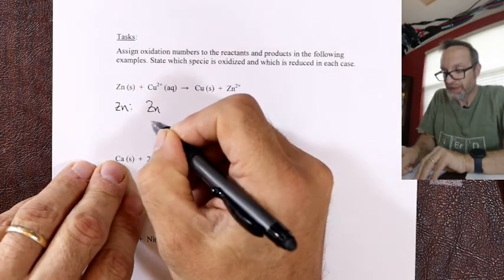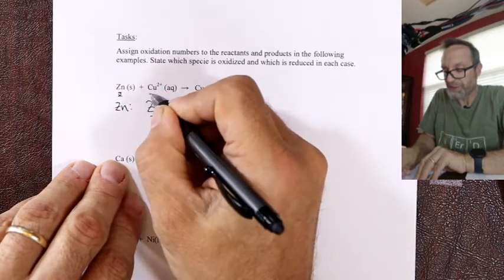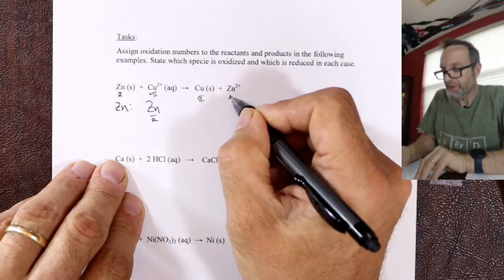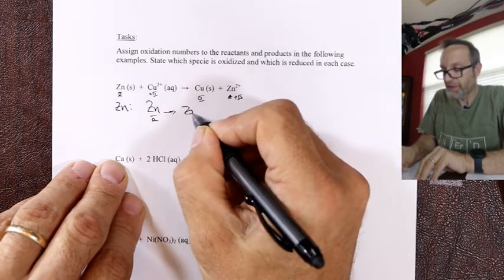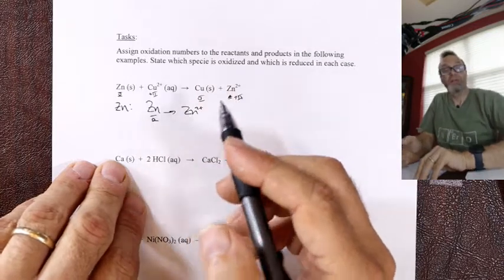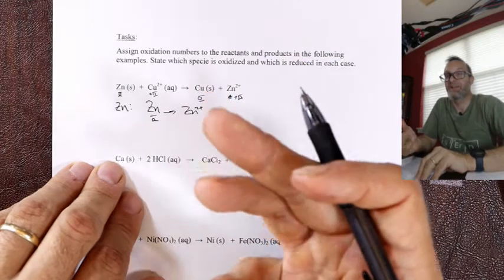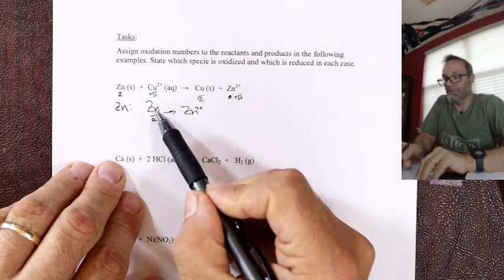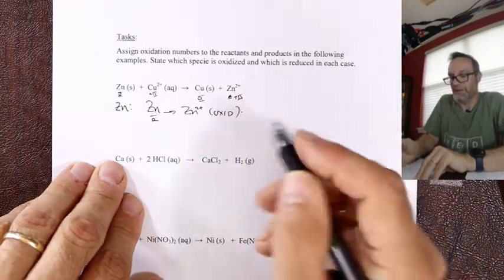For Zn + Cu²⁺ → Zn²⁺ + Cu: zinc at zero went to plus two — did it lose or gain electrons? It went plus, so it lost. Zinc was oxidized. Copper at plus two went to zero — it became more minus, it gained electrons. Reduction is gain.